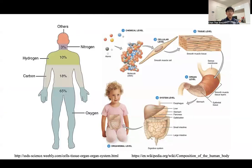Since biomaterial will be used in our body, we need to understand what elements are contained and composed in our body. The main one is oxygen, then carbon, hydrogen, and nitrogen. These four elements make up more than 90% of our body.